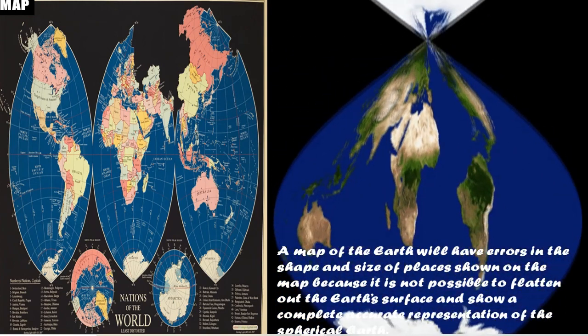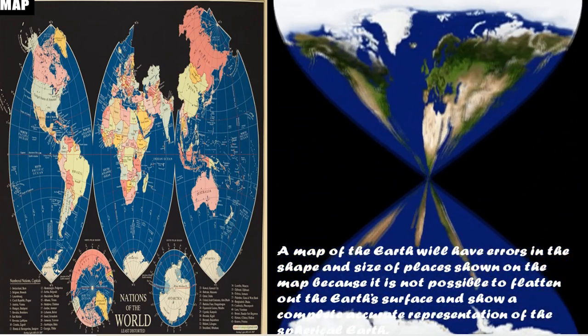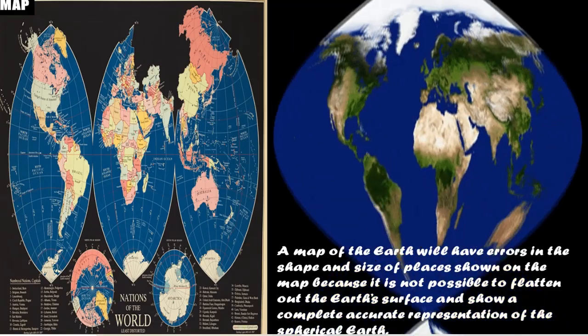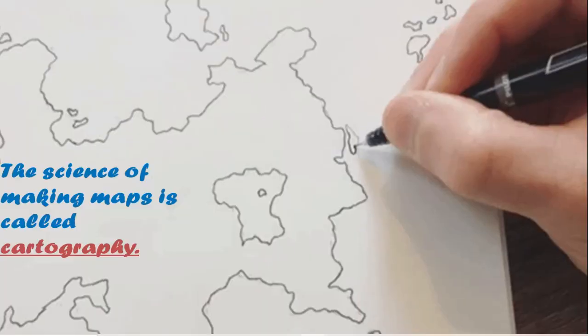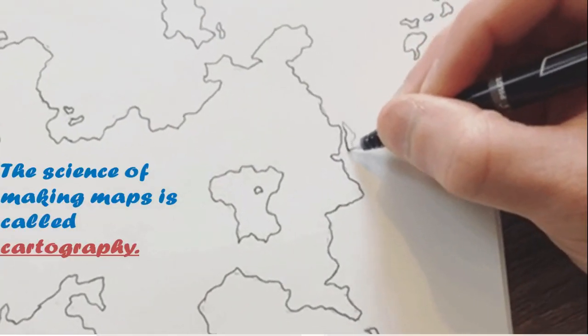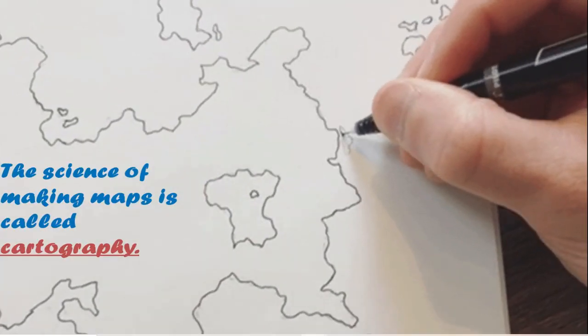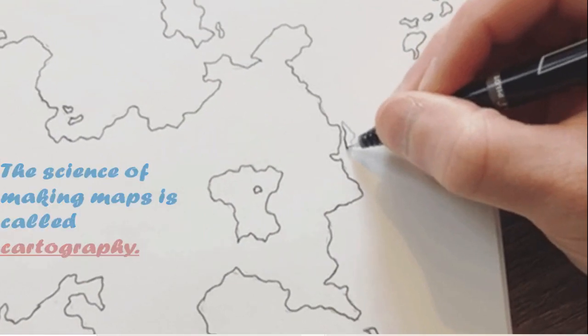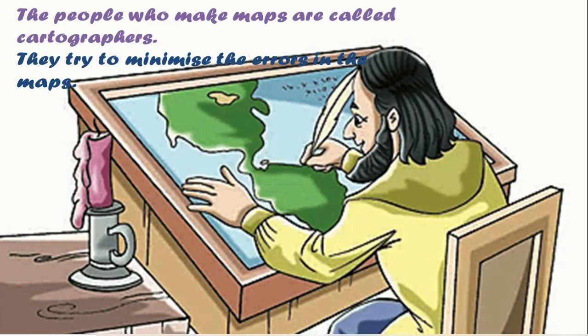The science of making maps is called cartography, and the people who make maps are called cartographers. Cartographers are the people who try to minimize the errors in maps.